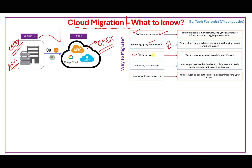Cloud migration also enhances collaboration. On-premises, applications are accessed from the office or via VPN. When moving to the cloud, everything can be managed over the internet, meaning if you have internet and a browser you can access it globally, regardless of location.